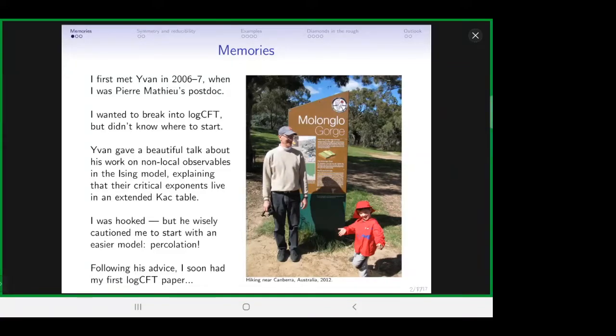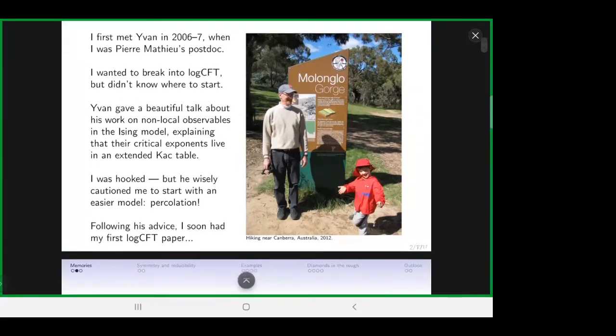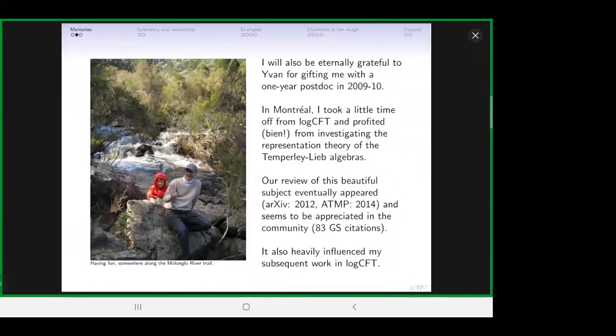There were various critical exponents which lived in an extended CATS table, not in the standard one from minimal models. This was super interesting to me. I wanted to know more about logarithmic CFTs. I said to Ivan, if I wanted to work on the Ising model, how would I get started? He said, don't start with the Ising model. You should start with something easier, like percolation. I don't know if he was being facetious, but I took him at face value.